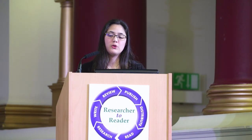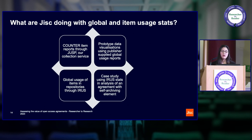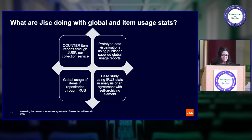What are we doing at the moment with global and item-level stats? There are four areas we're currently working on. Firstly, we are currently working to pull Counter item reports into our JOSP service — that's our service that collects Counter reports on behalf of multiple institutions and multiple publishers and pulls it all together in one place. We're looking to expand our offering to include item reports as well. Next, we're also going to be looking at global item reports — very soon we're going to be approaching publishers to request global item reports to determine their availability and prototype some visualizations, which we're going to share for feedback. This will inform the future direction of our data collection services and how JISC evaluates agreements more holistically.